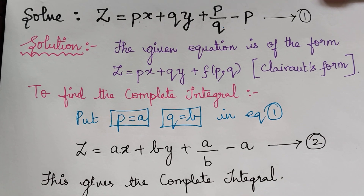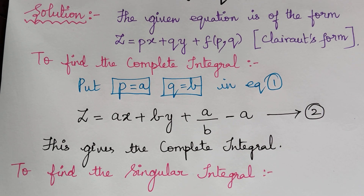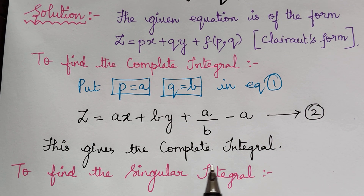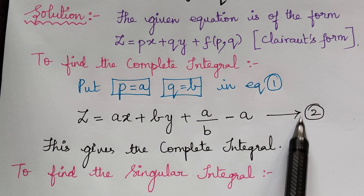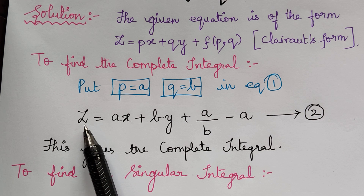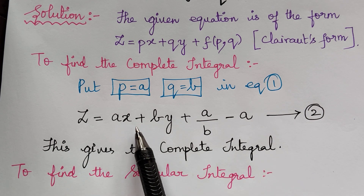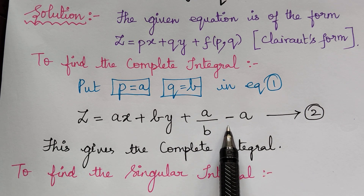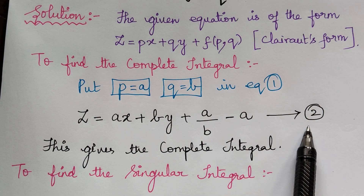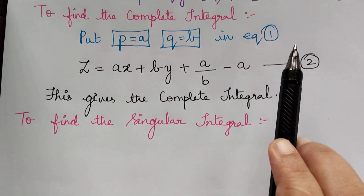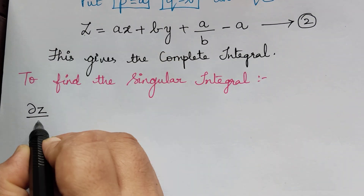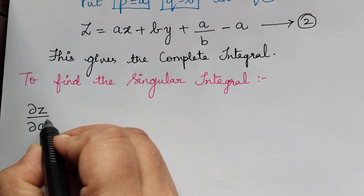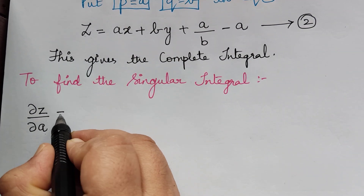After finding the complete integral, the next step is to find the singular integral. To find the singular integral, we eliminate the arbitrary constants a and b from equation 2, by differentiating equation 2 with respect to a and b partially. On differentiating equation 2 partially with respect to a, we get dou z by dou a.